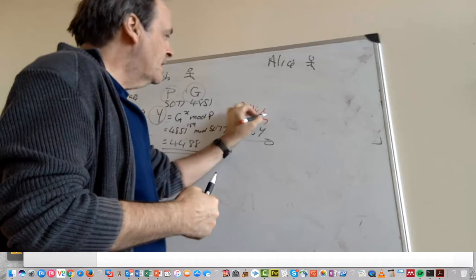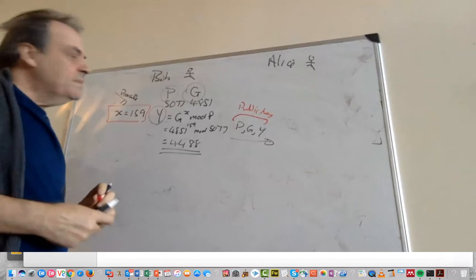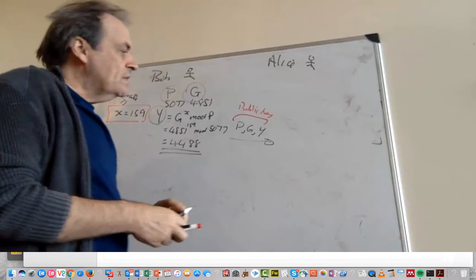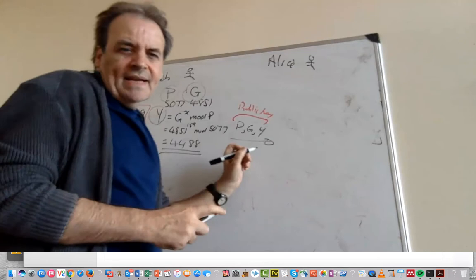His private key is here and has this value. So the value that's sent over is 5077, 4851, and 4488. Now what we'll do is allow Alice to encrypt something to Bob and then get it back again.